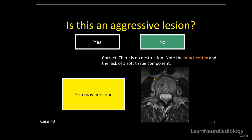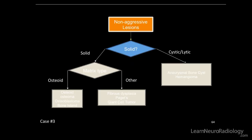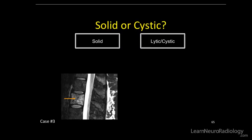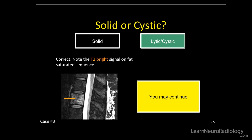There's an intact cortex, no soft tissue component, no ill-defined margin. So is the lesion solid or cystic lytic? For the purposes of this talk, we're going to use T2 signal intensity as one of our main indicators. This lesion is T2 bright, similar to CSF, so this is a cystic lytic lesion for the purposes of this talk.